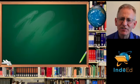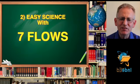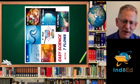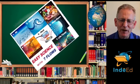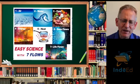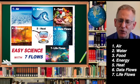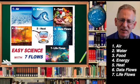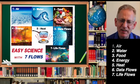Now changing topics. We go to number 2: Easy Science with Seven Flows. This is the one-pager. We are going to be talking about the flows of air, water, food, energy, heat, data, and life.